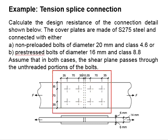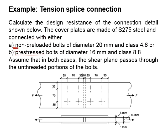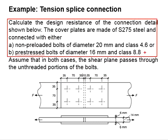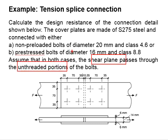There are two ways to connect the connections. First is to use a non-preloaded bolt of diameter 20 mm, class 4.6. The second one is a pre-stressed bolt of diameter 16 mm, class 8.8. We will need to calculate separately for the two types of connections. It is assumed that for both cases, the shear plane will pass through the unthreaded portions of the bolt.